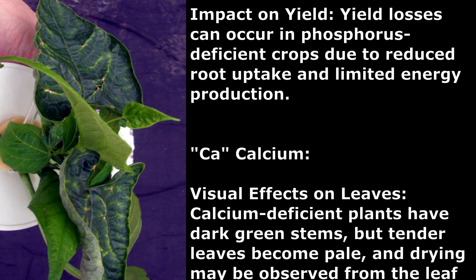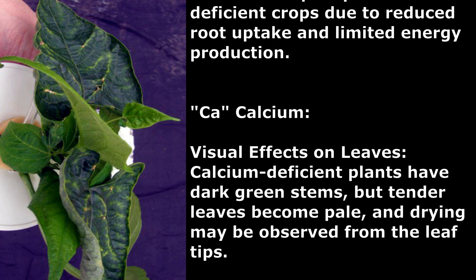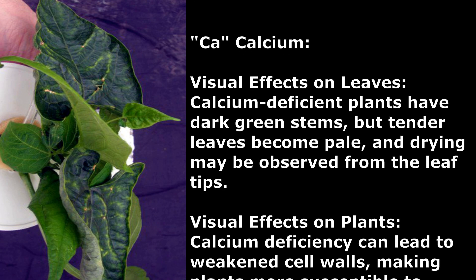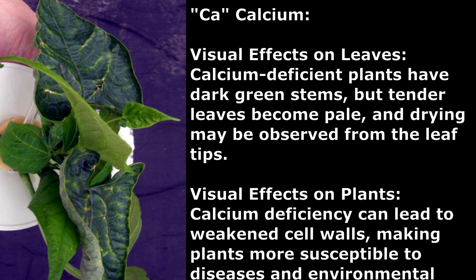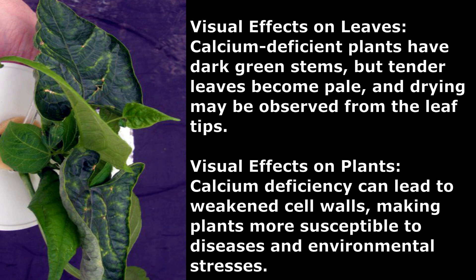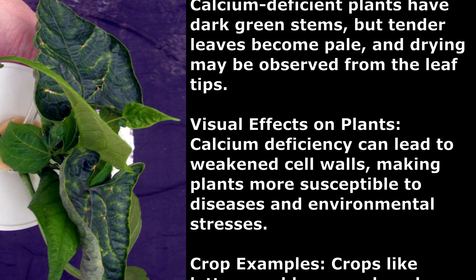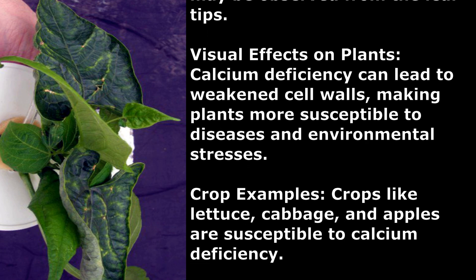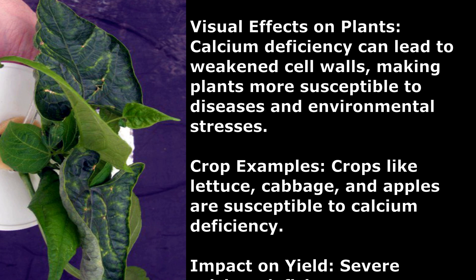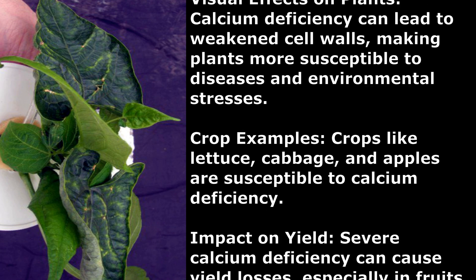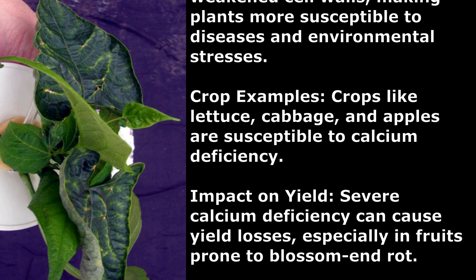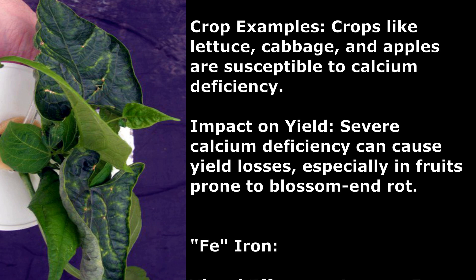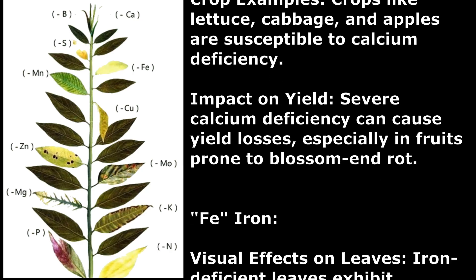Calcium. Visual Effects on Leaves: Calcium-deficient plants have dark green stems, but tender leaves become pale, and drying may be observed from the leaf tips. Visual Effects on Plants: Calcium deficiency can lead to weakened cell walls, making plants more susceptible to diseases and environmental stresses. Crop Examples: Crops like lettuce, cabbage, and apples are susceptible to calcium deficiency. Impact on Yield: Severe calcium deficiency can cause yield losses, especially in fruits prone to blossom end rot.